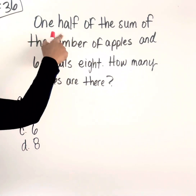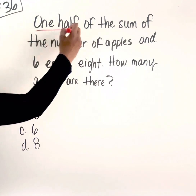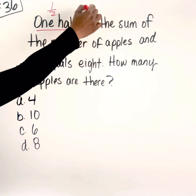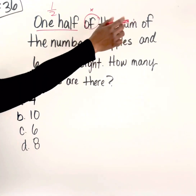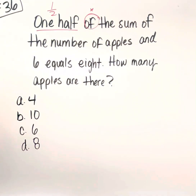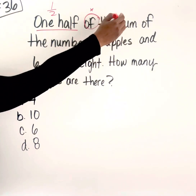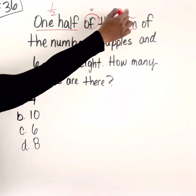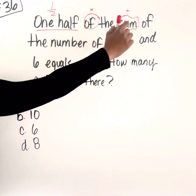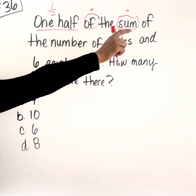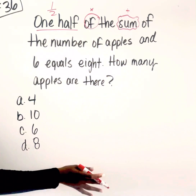It says 'one half of' — so one half is a fraction, and 'of' is an indication that we need to multiply. Then 'the sum of' — this is a caveat you have to pay attention to. You won't see it that often, but you want to be aware of it. We know sum means that we add, but if it's followed by the word 'of', that means whatever comes behind it is going to be grouped together in parentheses.